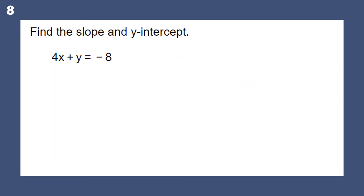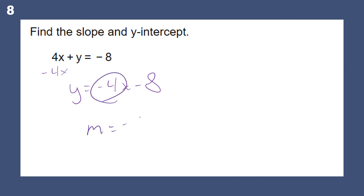Find the slope and y-intercept. I can do that by putting it in y equals mx plus b form. I subtract 4x from both sides and get y equals negative 4x minus 8. That gives me my slope, and right there is my y-intercept.